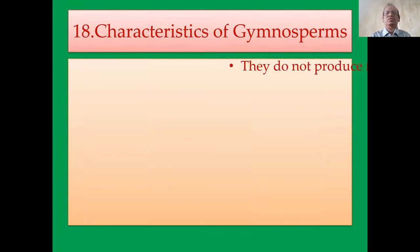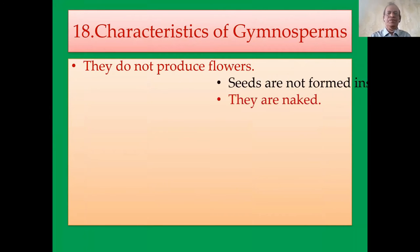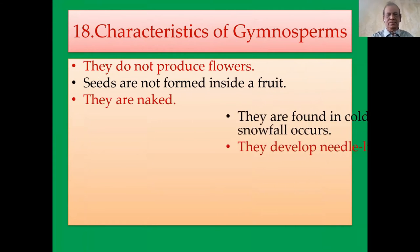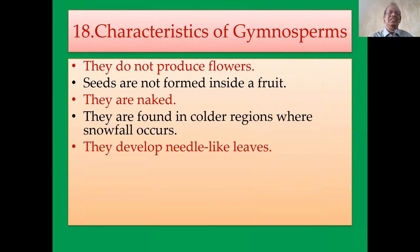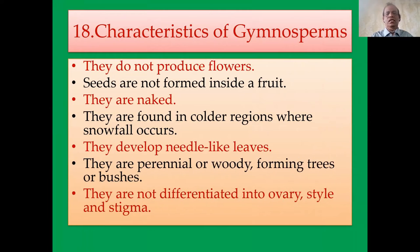Characteristics of gymnosperms: they do not produce flowers; seeds are not formed inside fruit — they are naked seeds. They are found in cooler regions where snowfall occurs. They develop needle-like leaves. They are perennial or woody plants forming trees or bushes. They are not differentiated into ovaries, style, or stigma.